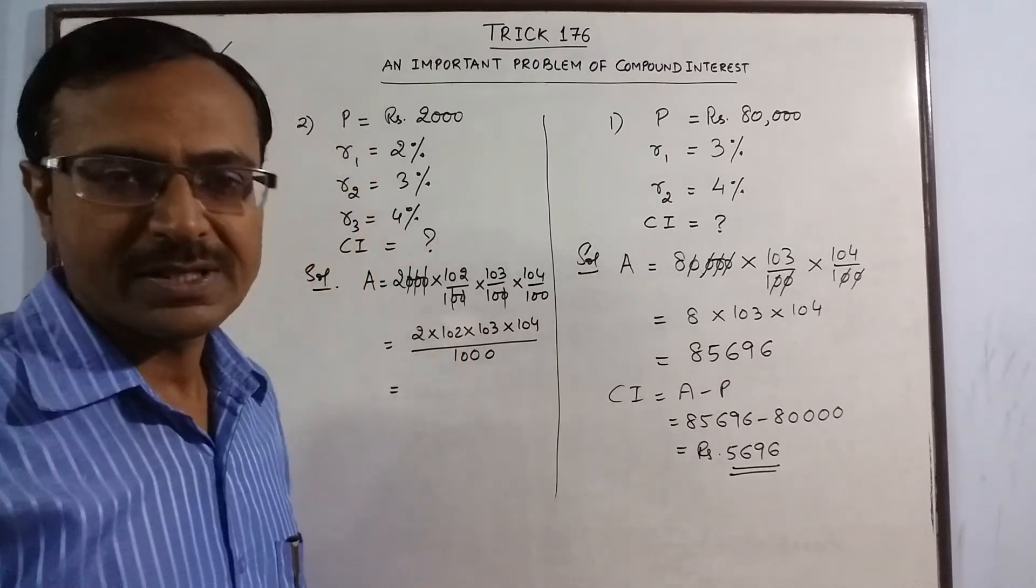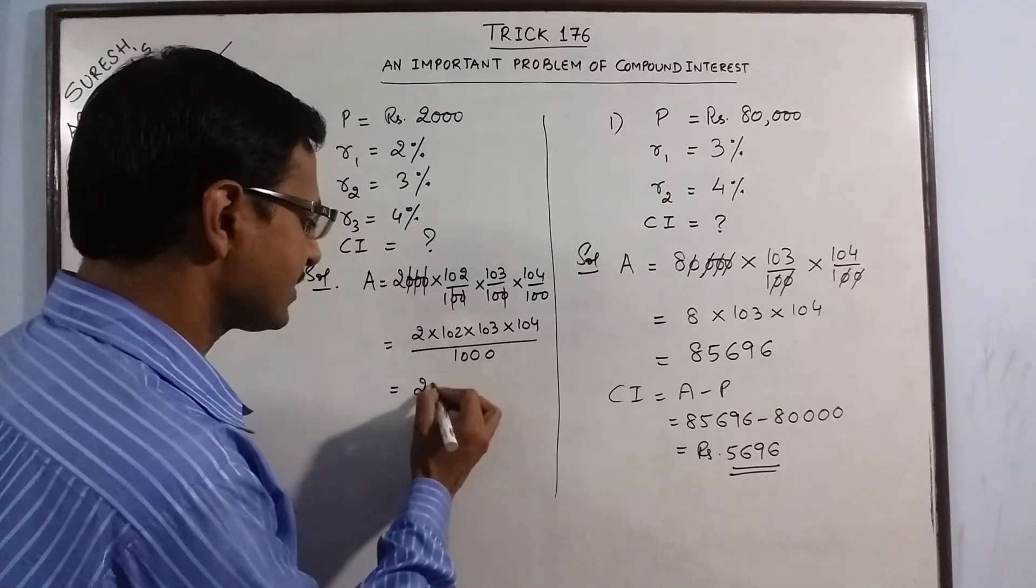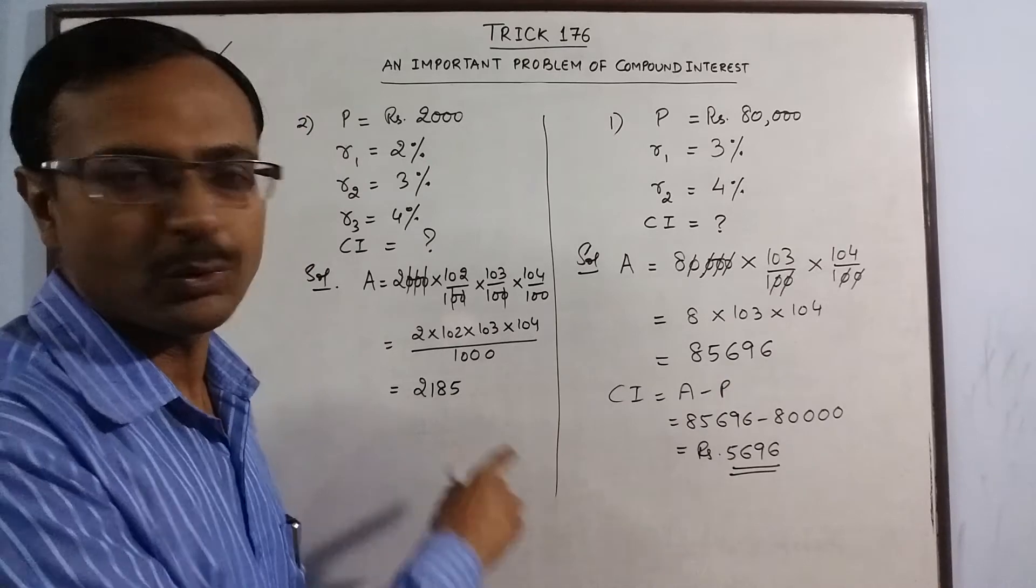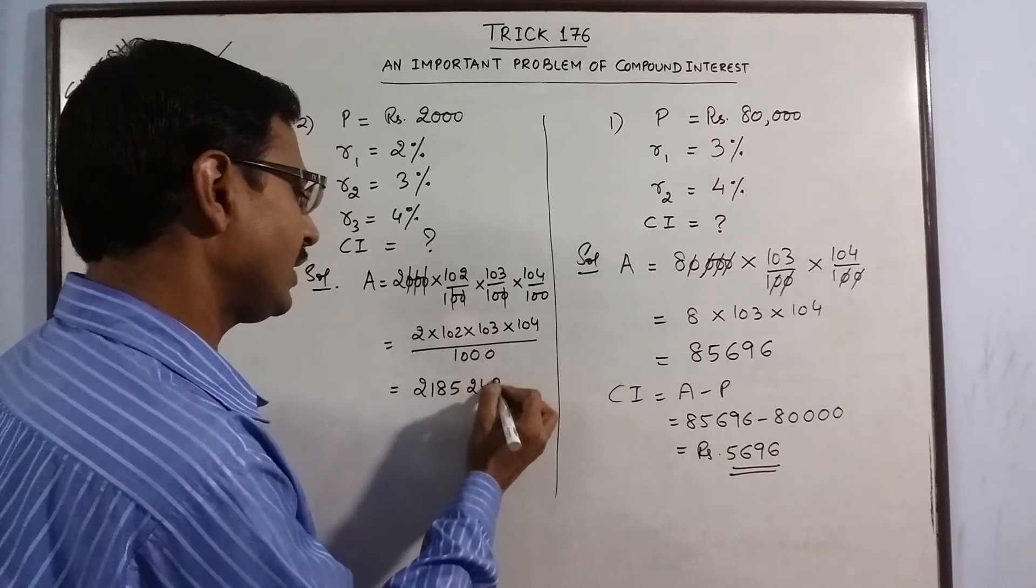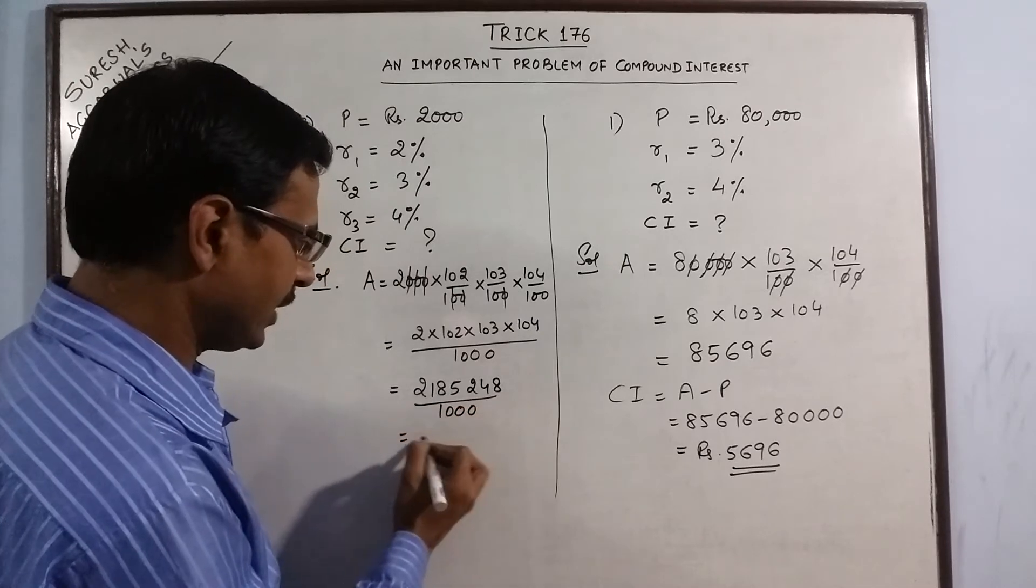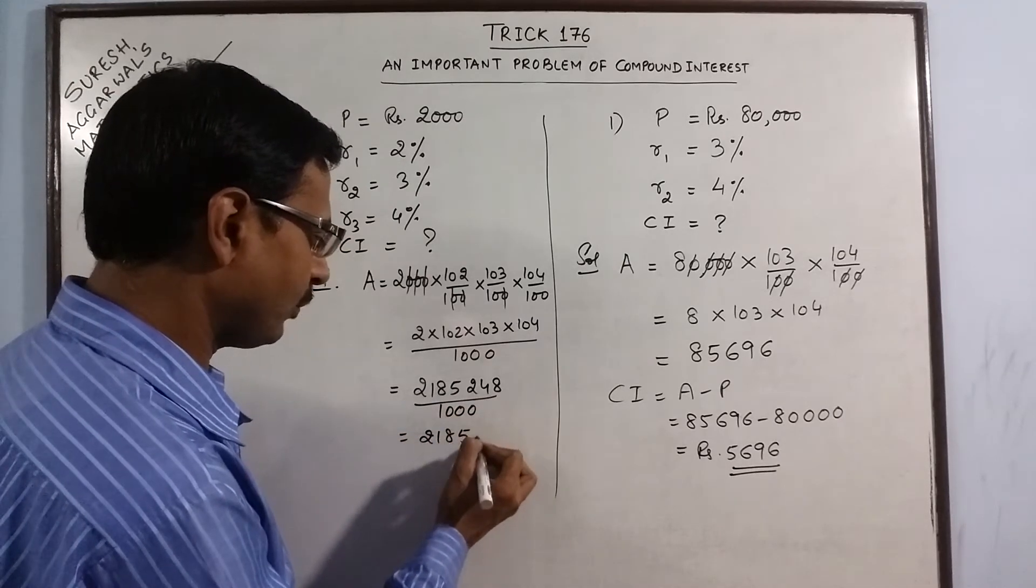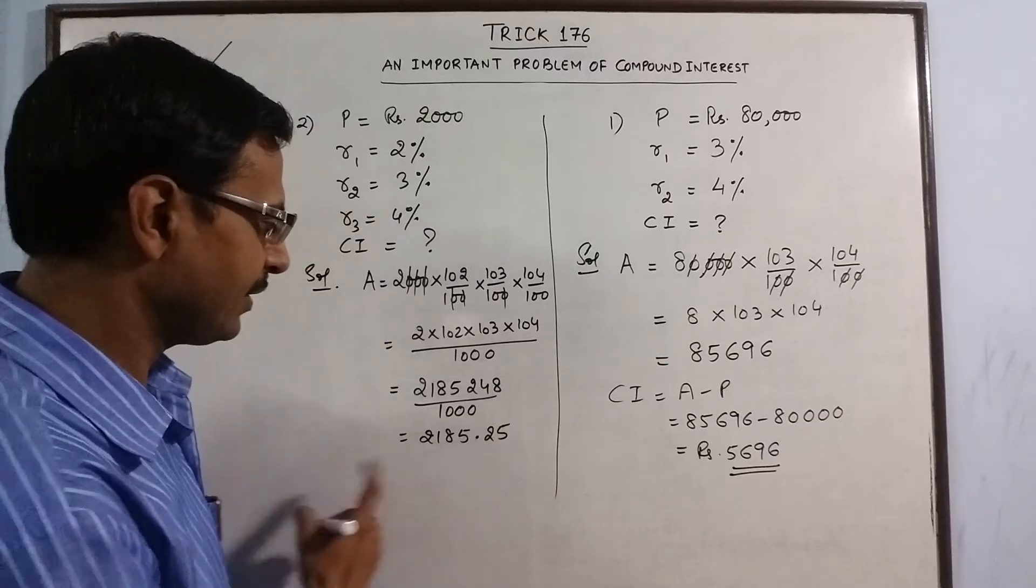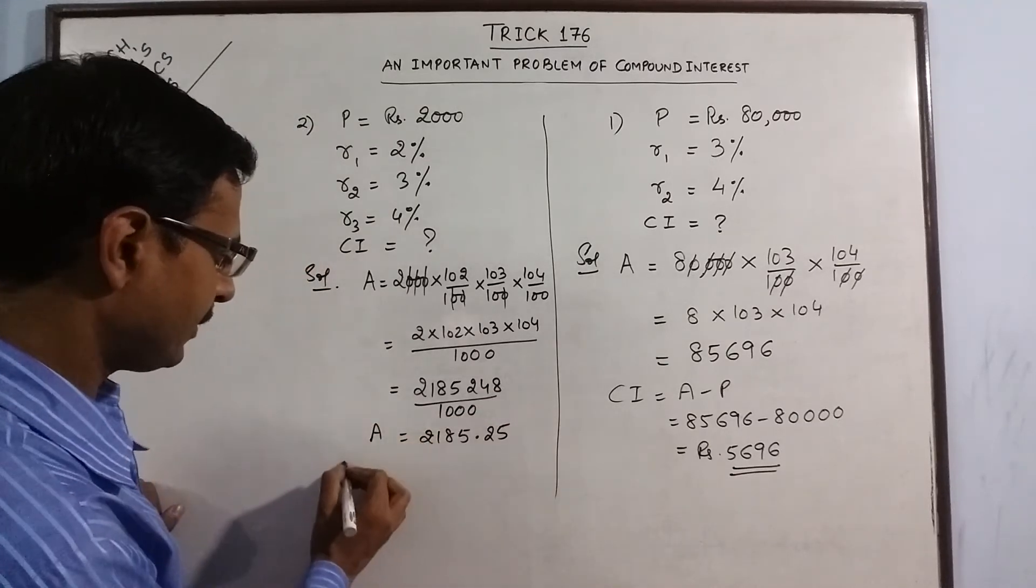For this I have calculated this product for you. So to save time 2185248 is the required product. And just divide by 1000. So you get 2185 point, this is rounded up to 2 decimal places, 25. So this is the amount obtained.